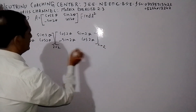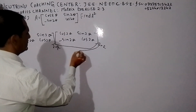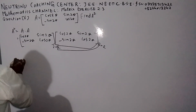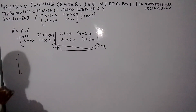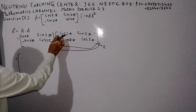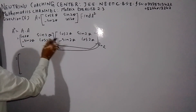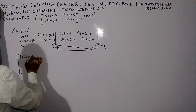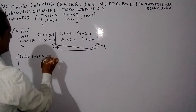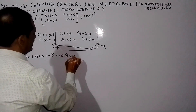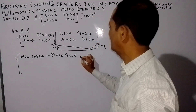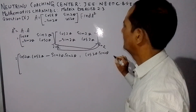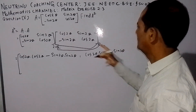The number of columns of the pre-matrix is 2, the number of rows of the post-matrix is 2, so multiplication is valid. Now multiplying: first row, first column gives cos(2θ) into cos(2θ) minus sin(2θ) into sin(2θ). For first row, second column, we have cos(2θ) into sin(2θ).